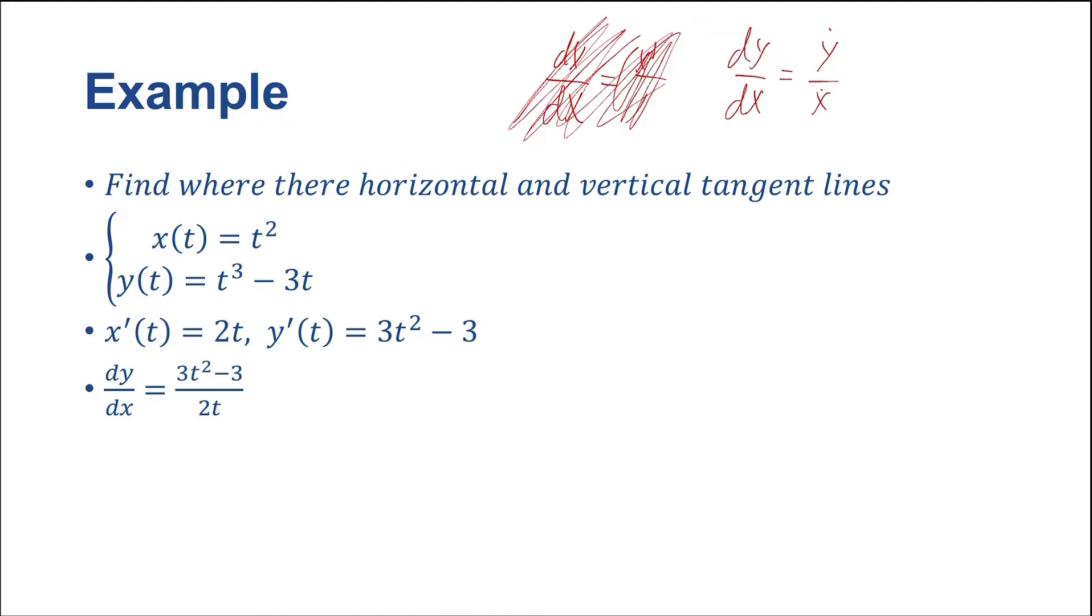now how do we find the horizontal and vertical tangent lines? Well, so if we have a vertical tangent line, that means that our slope is undefined. If we have a horizontal tangent line, that means that our slope is zero. So what makes this undefined? That's when this is equal to zero, and what makes this zero? That's when this is equal to zero. So in order to find where we have horizontal tangent lines, we need to make the numerator of this dy dx expression equal to zero.